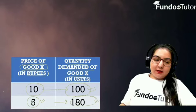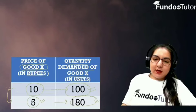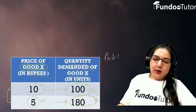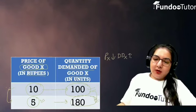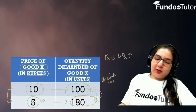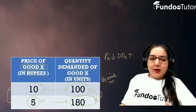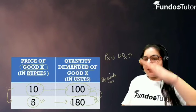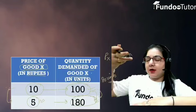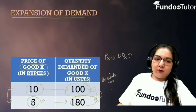यानि कि जब price decrease हुआ — price 10 Rupees to 5 Rupees हो गया. जैसे ही price decrease हुआ Good X का, तो demand for Good X increase हो गई. आप देख सकते हैं कि demand for Good X increase हो चुकी है. जिस concept में price कम होने की वज़ह से same good की demand increase हो जाती है, इसे हम बोलते हैं — expansion of demand.